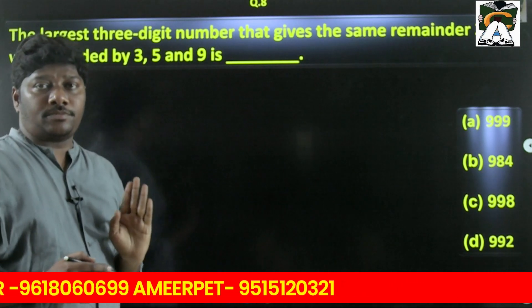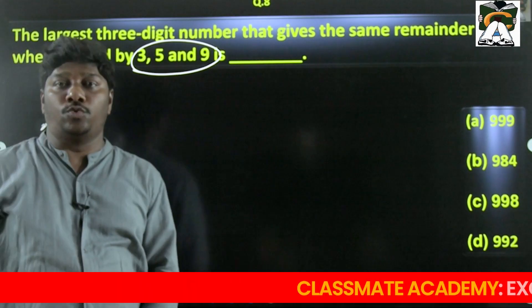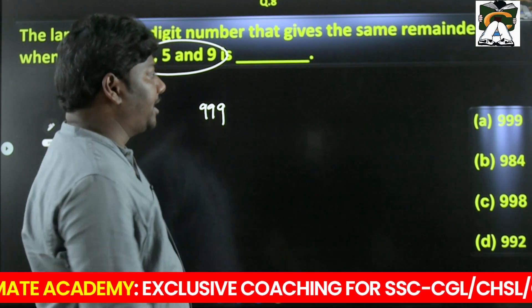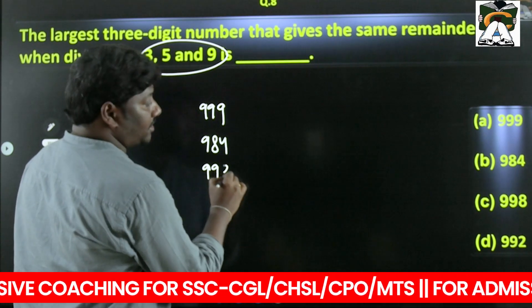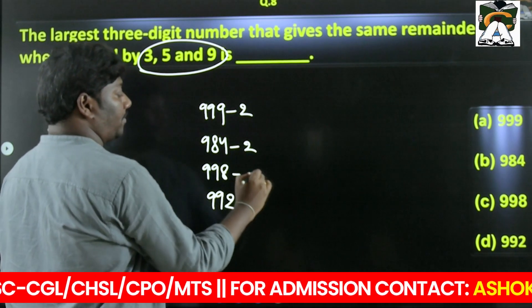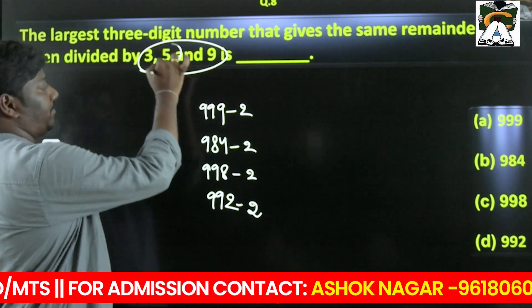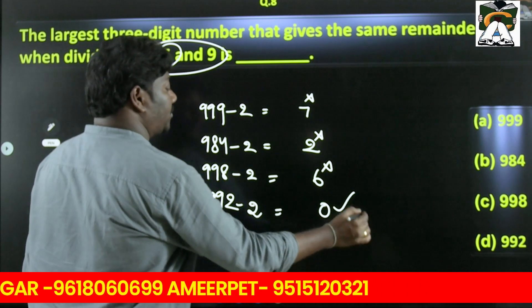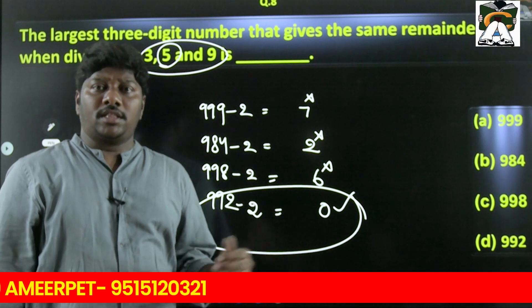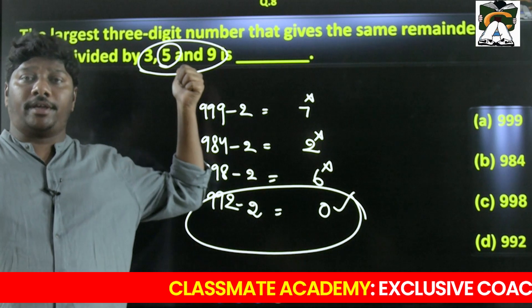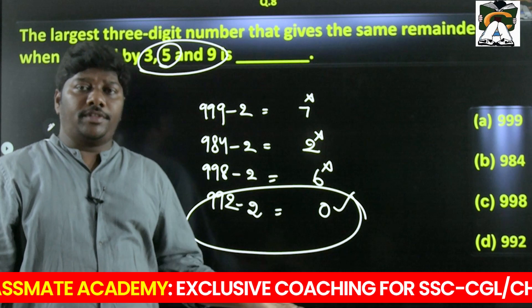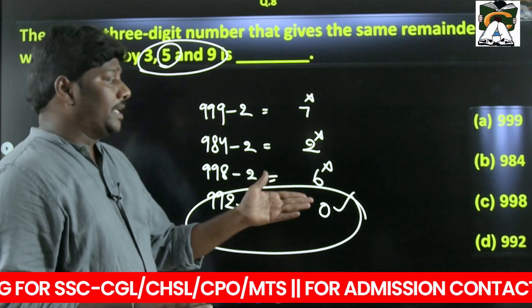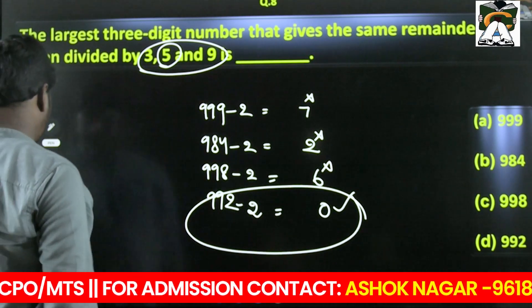The largest 3-digit number that gives remainder 2 when divided by 3, 5, and 9: subtract 2 from 999, giving 997. Check options 997, 995, 992, 990 — the number (after subtracting 2) must be divisible by 5, so last digit must be 0 or 5. Among the candidates, 990 ends in 0. So the answer is 990 + 2 = 992. Only one option is divisible by 5, so no need to check divisibility by 3 and 9 further.